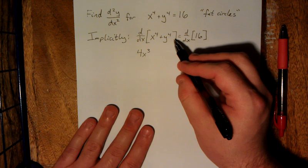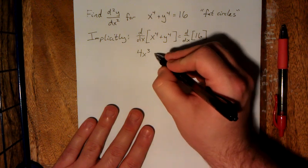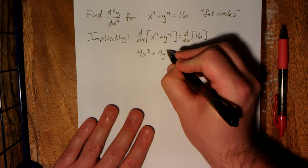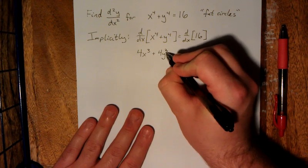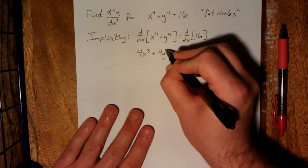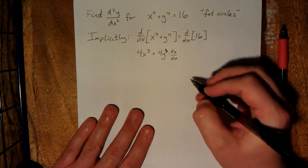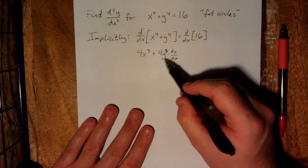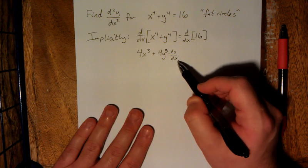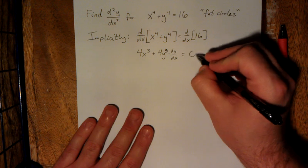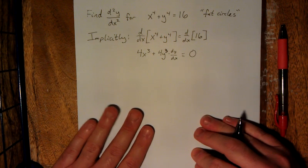Now for the y to the fourth, this is where we're going to be using a little bit of the chain rule in our implicit differentiation. First, we differentiate y to the fourth with respect to y, and then we multiply by the derivative of y with respect to x. That is our chain rule. So we get 4y cubed times dy/dx. On the right-hand side, the derivative of a constant with respect to any variable is going to be 0.